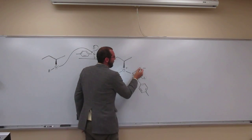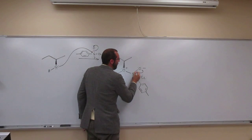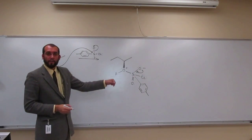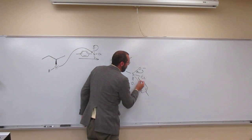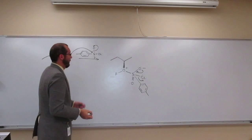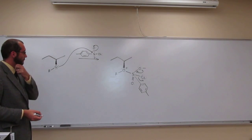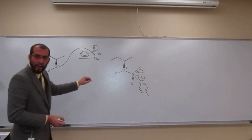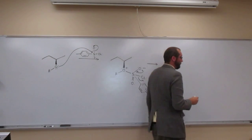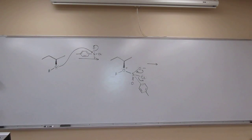So now what we're going to do is take these electrons, make the double bond again, and kick off that chlorine as a good leaving group. Okay. So now I want you to draw the product of that mechanism. Just do your best, okay?